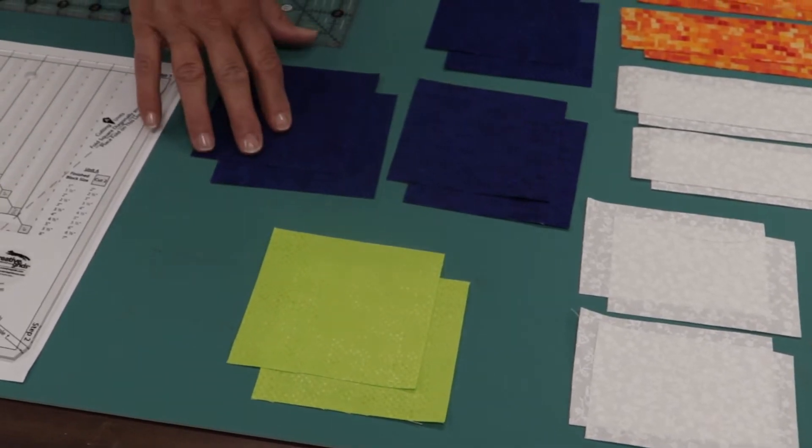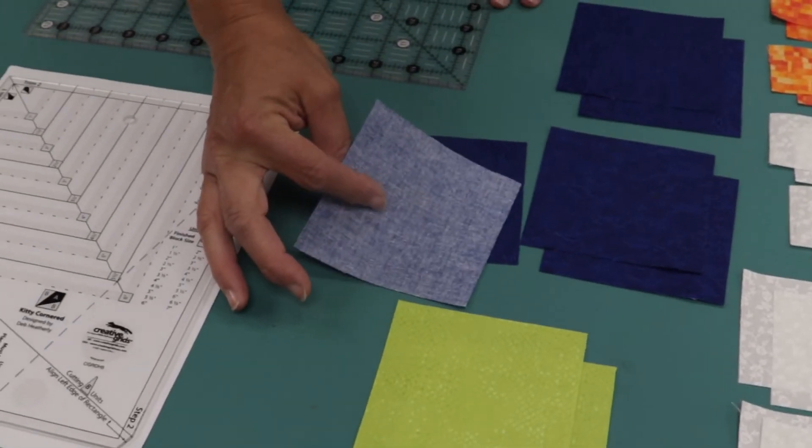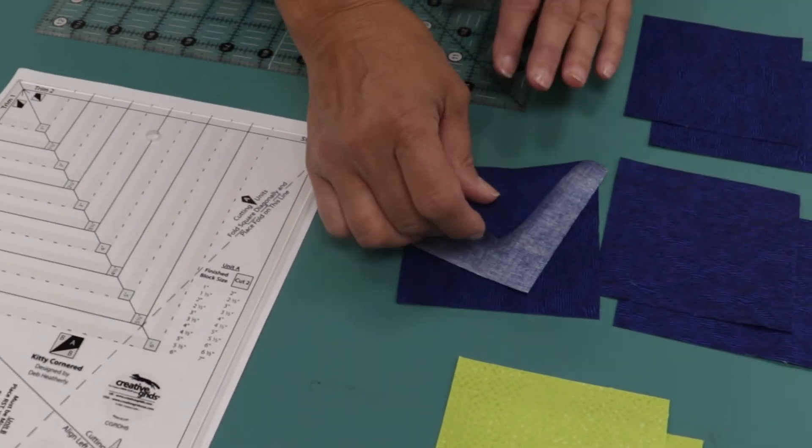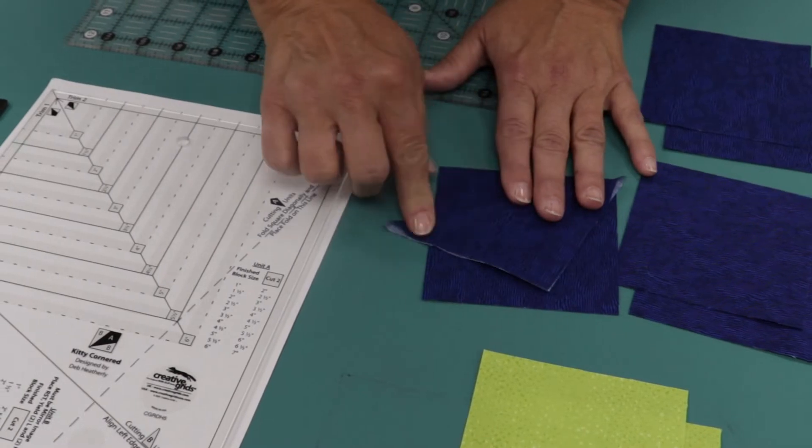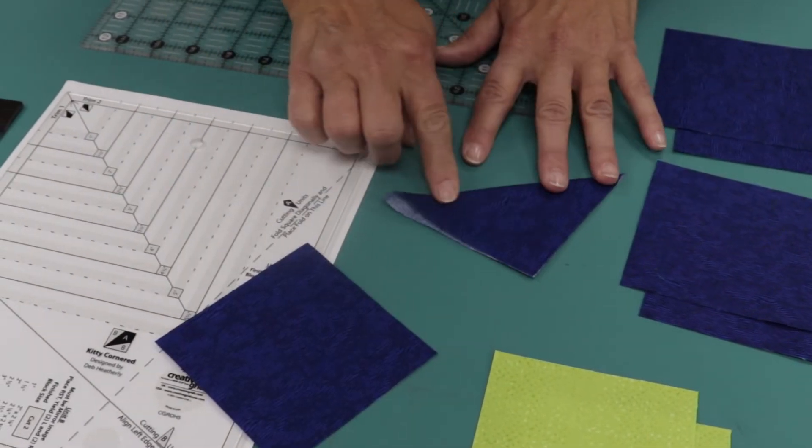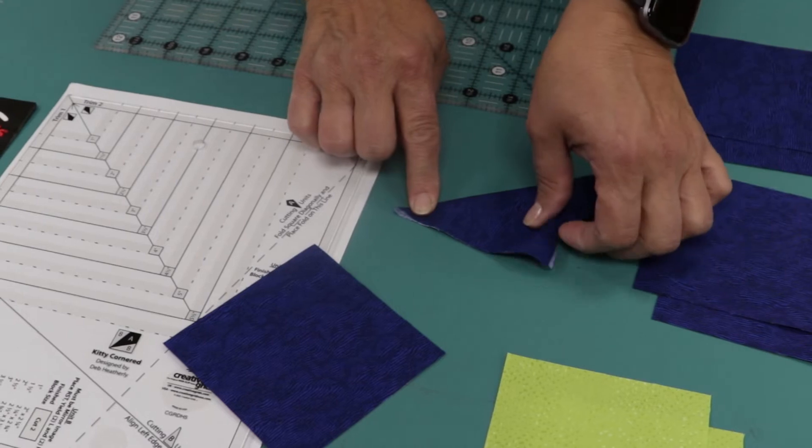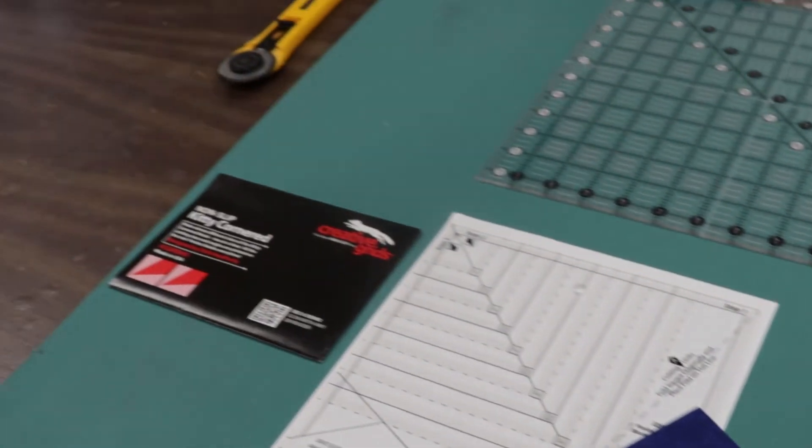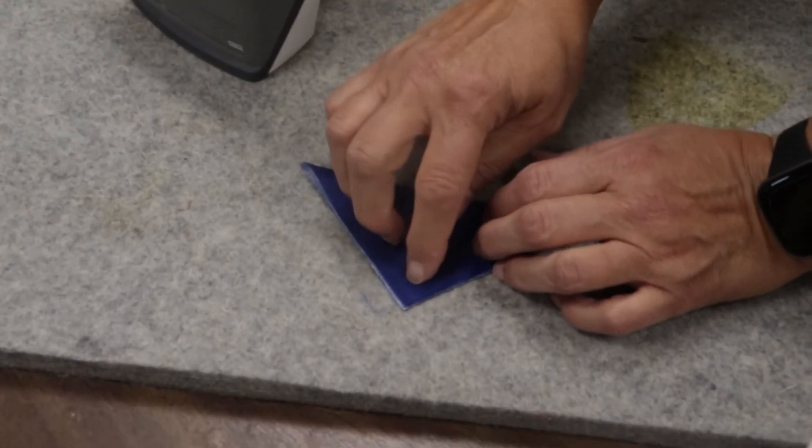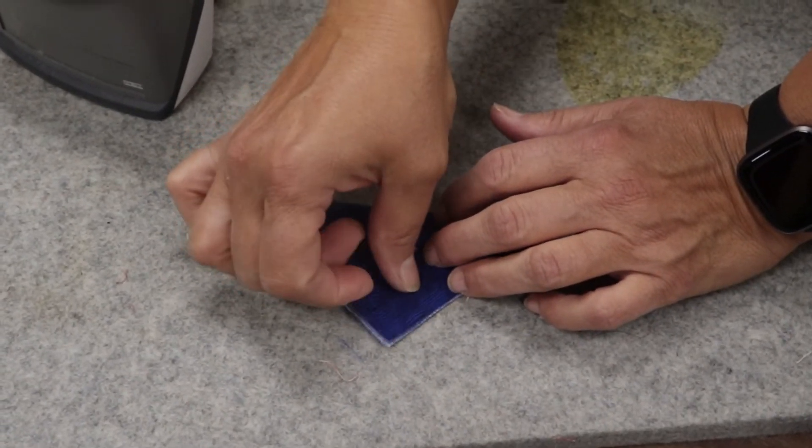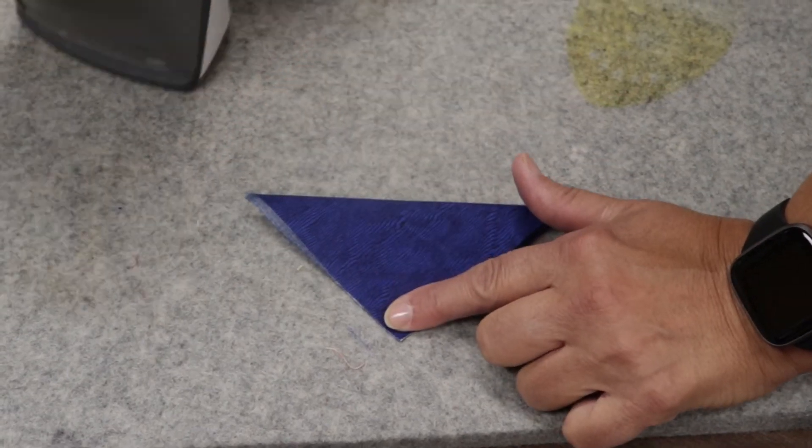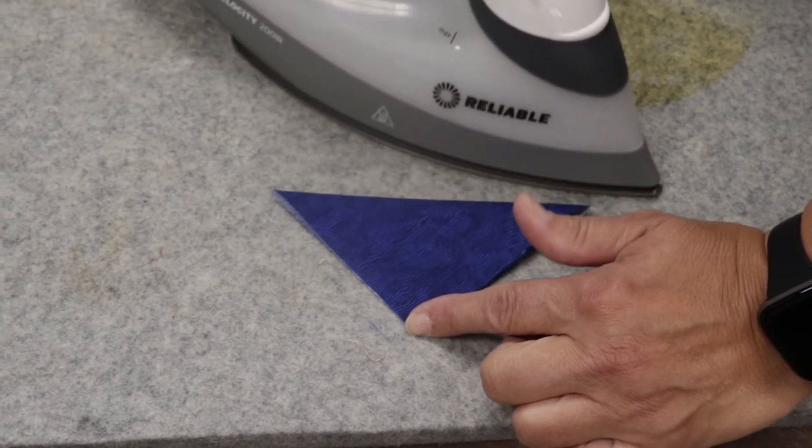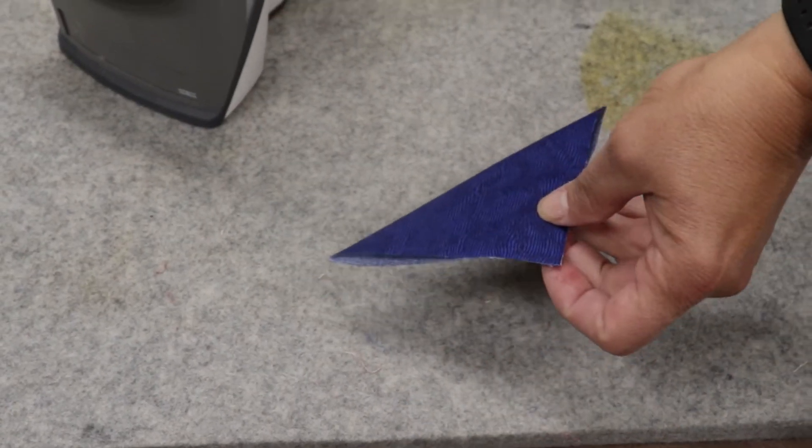The first thing we want to do is to take our squares that we cut 4 inches. And what we're going to do is we're going to fold them on the diagonal. And we're just going to give those a little press. So let me just run over to the iron real quick.